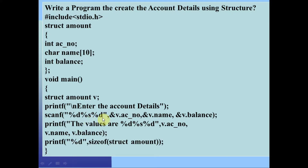Next we print the data: v.account_number, v.name, and v.balance. Then we find the total size of the structure using sizeof(struct amount) or sizeof(v) — both are accepted. This tells us how many bytes are occupied by the structure.